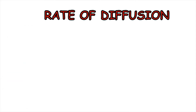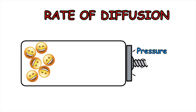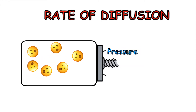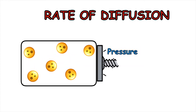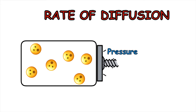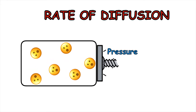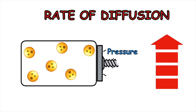The rate of diffusion can also be changed by pressure. The container becomes smaller as pressure is applied. This makes molecules move faster. Again, the rate of diffusion increases.